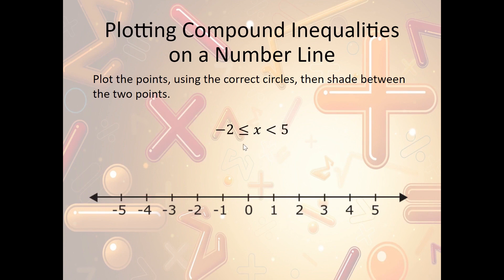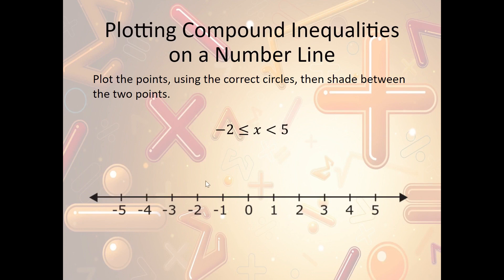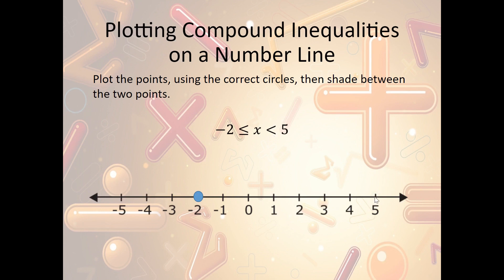Let's take a look at another example: negative two is less than or equal to x is less than five. We know we're going to have a point at negative two. They did add something extra, so it's going to be a closed circle at negative two. We're going to have an open circle at five — they didn't add anything extra. Based on our compound inequality, x is between those two numbers, so we shade in between.